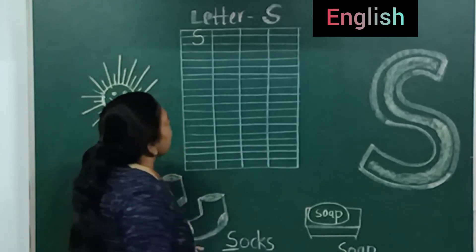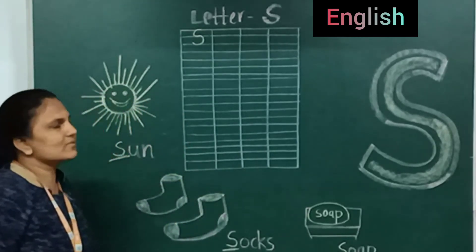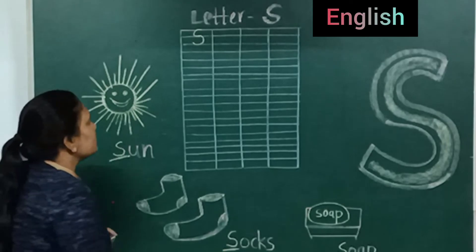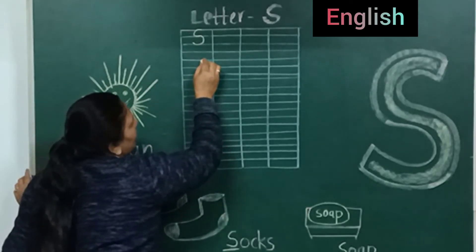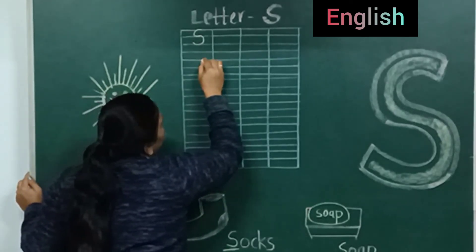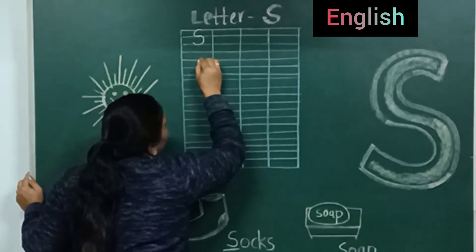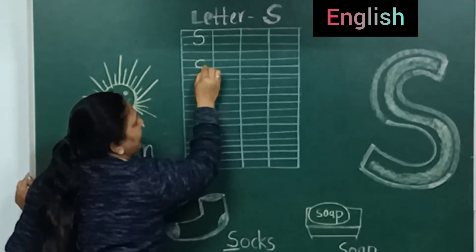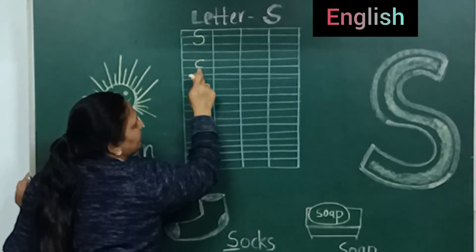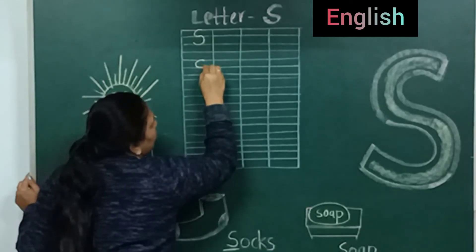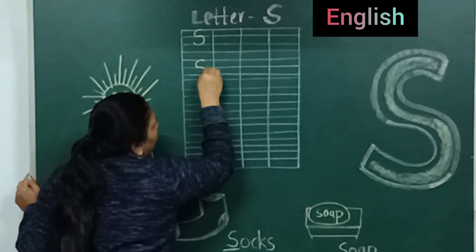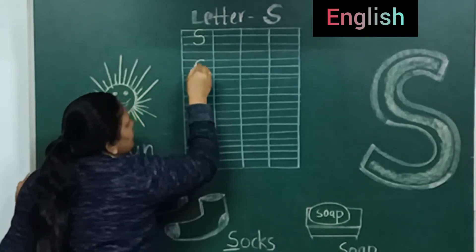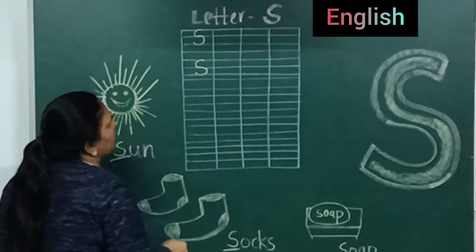And then we will make another curve till the second blue line — like this. Which letter is this? Letter S. First, put your pencil on the red line and we will make a curve till the first blue line, like C. And then we will make another curve till the second blue line.